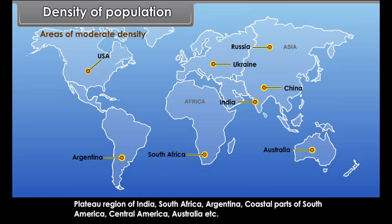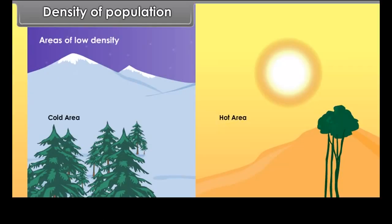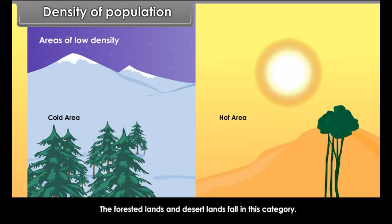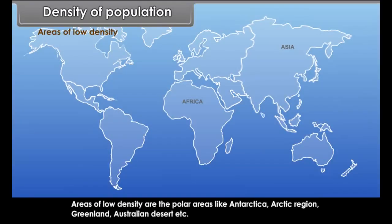Areas of moderate density have facilities for irrigation and mining. The moderately populated areas include Central USA, Southern Russia, Ukraine, Central China, the Plateau region of India, South Africa, Argentina, coastal parts of South America, Central America, and Australia.